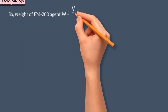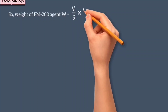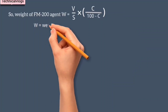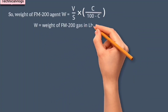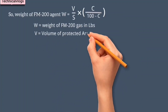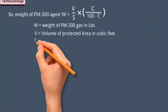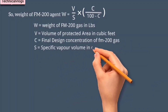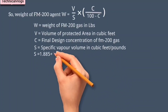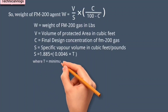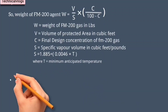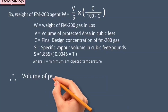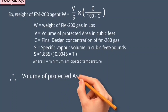We know the formula for calculating weight of FM-200 gas. By using this formula, we can easily calculate the weight. Where W equals weight of FM-200 gas in pounds, V equals volume of protected area in cubic feet, C equals final design concentration of FM-200 gas, and S equals specific vapor volume in cubic feet per pound.